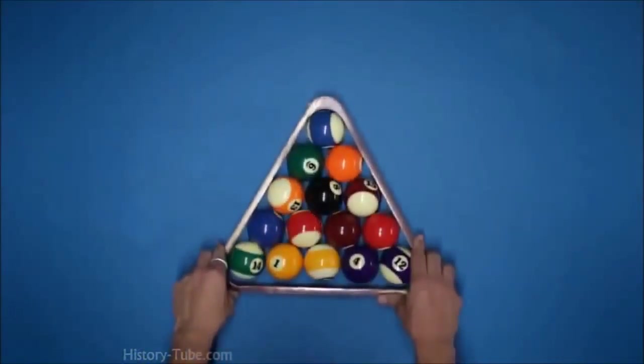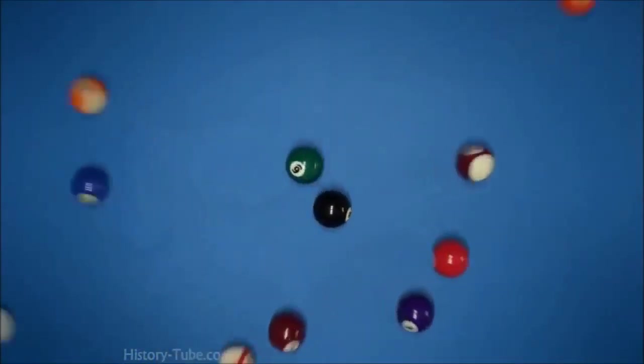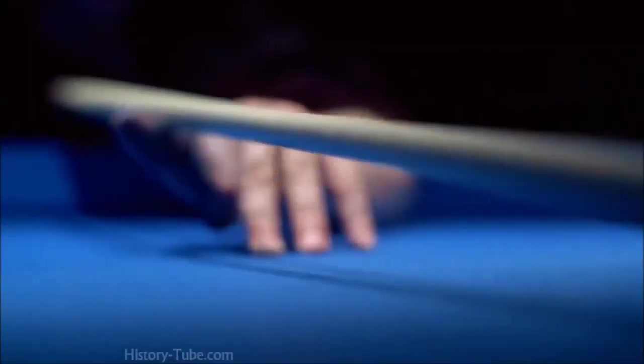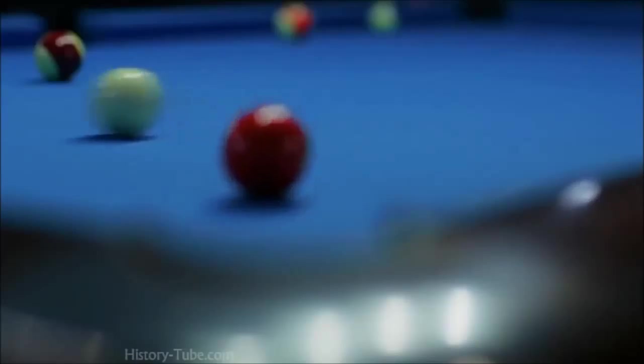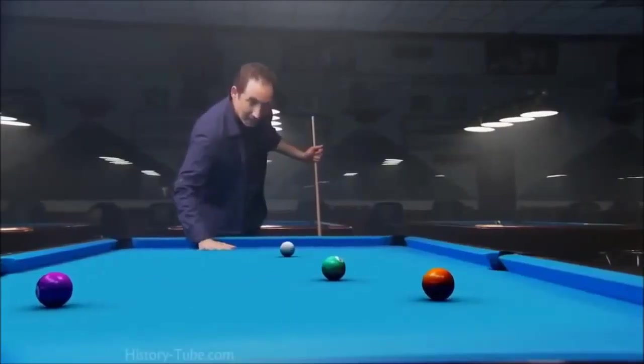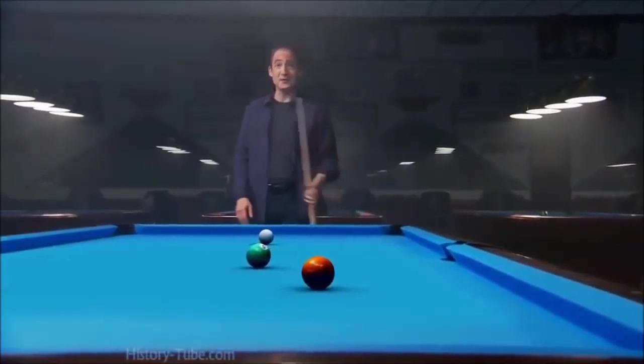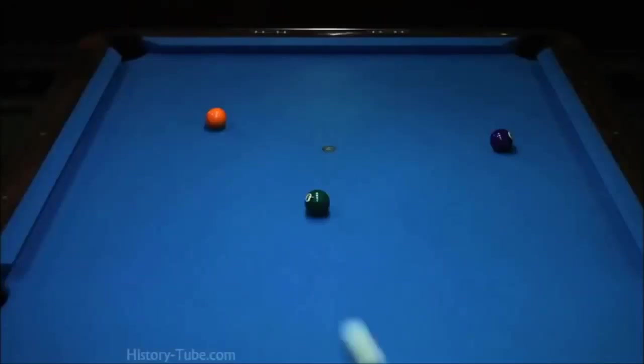This was a truly radical break from Newton. Think of this table as space-time. And think of these balls as objects in space. Now, if space-time were nice and flat, like the surface of this table, objects would travel in straight lines.